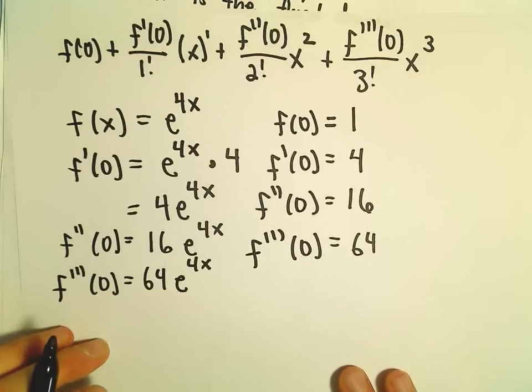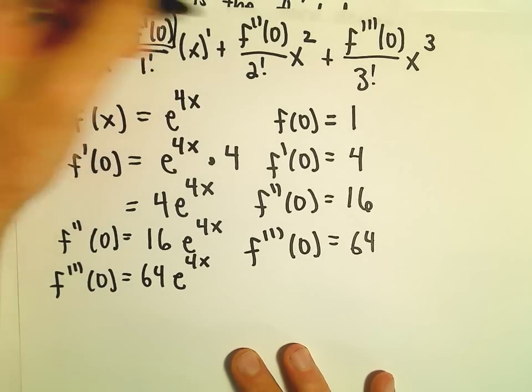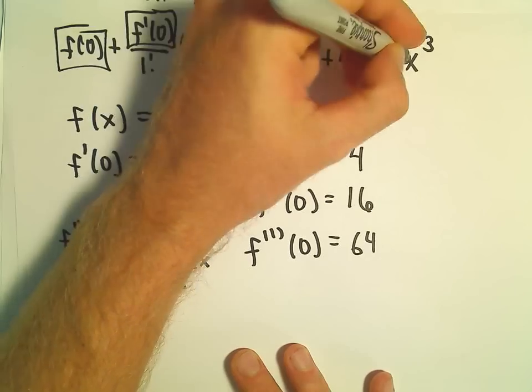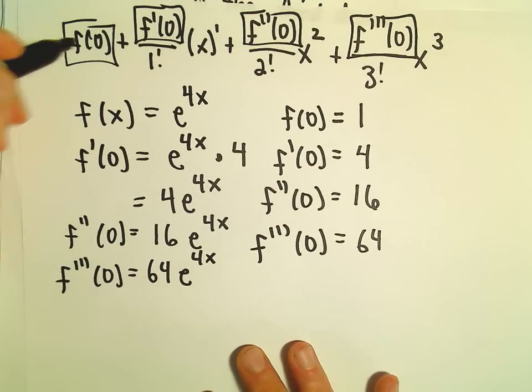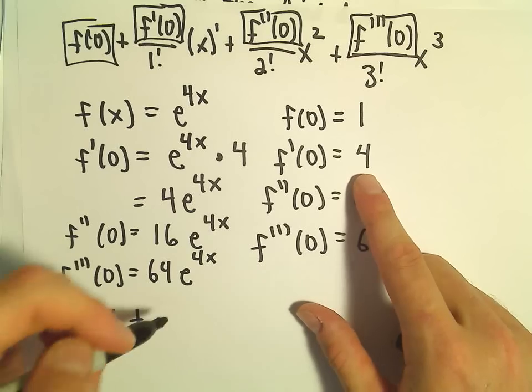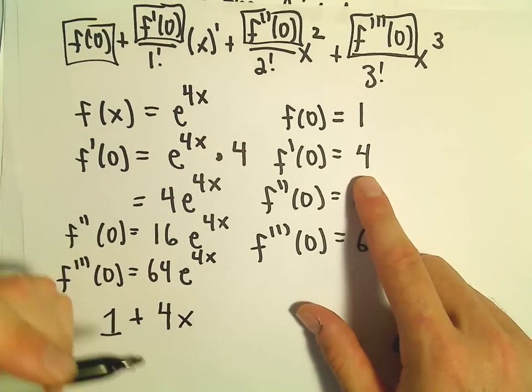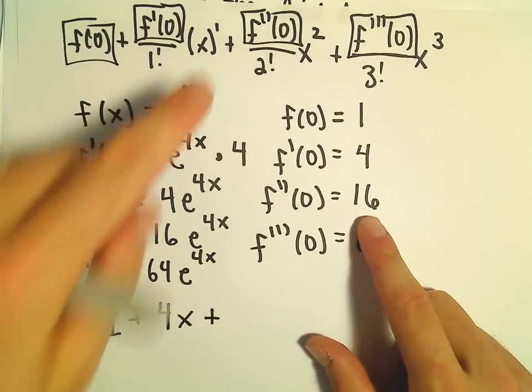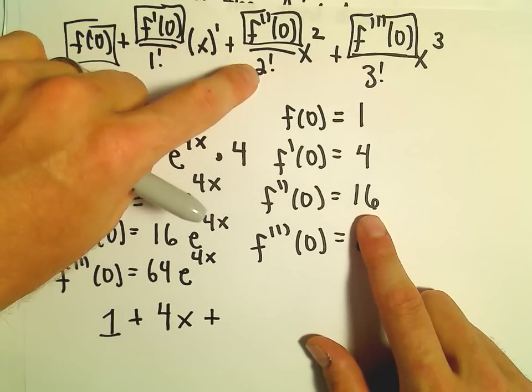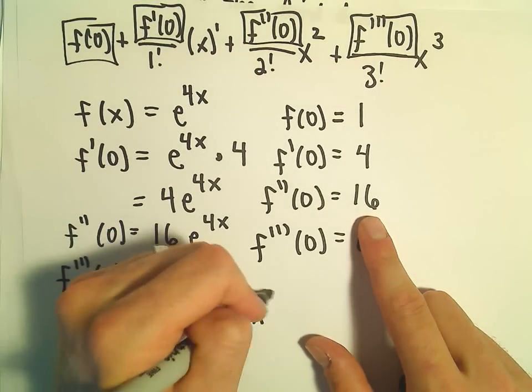Now filling in our formula, we'll have our degree 3 Maclaurin polynomial. f(0) = 1. f'(0) = 4, so 4/1! is just 4x. f''(0) = 16, so 16 divided by 2 is 8, giving us 8x².